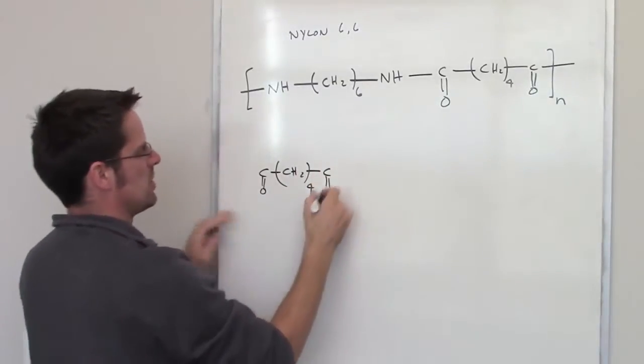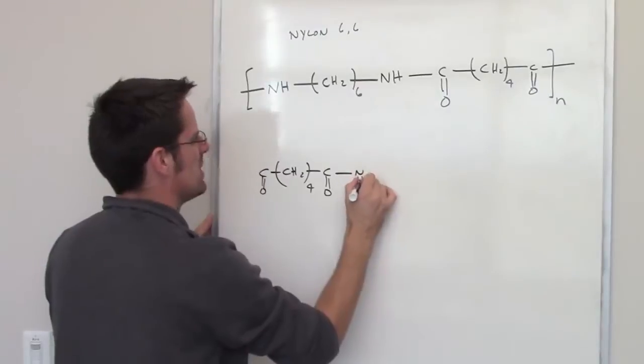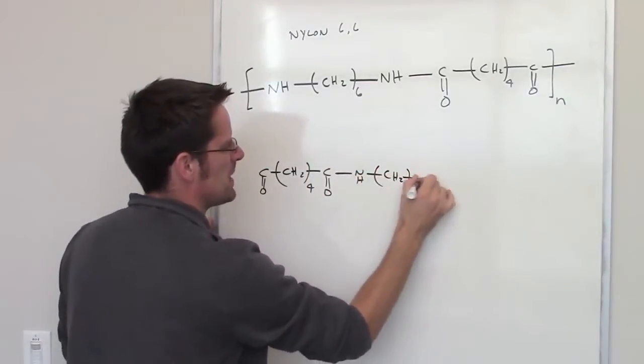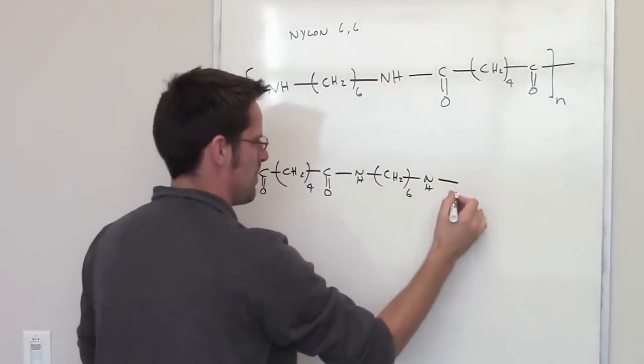It's stuck to another one of these carbons, then bonded to this NH, stuck to six CH2s in a row, stuck to another NH, and then the pattern repeats itself.